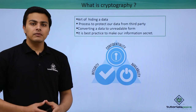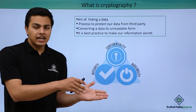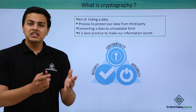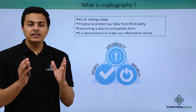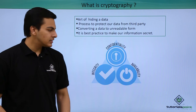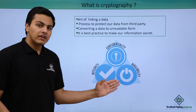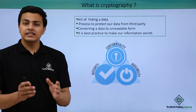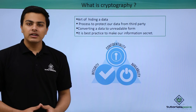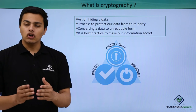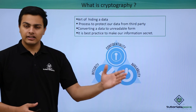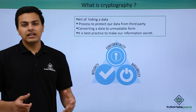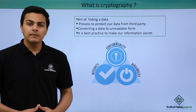We can use cryptography to convert our normal text into an unreadable form so that it can remain safe from third party people. The main three principles of cryptography are confidentiality, availability, and integrity. Confidentiality ensures that our data is secure, integrity ensures that our data is not being tampered or altered by third party people, and availability ensures that our data is available whenever we need it.